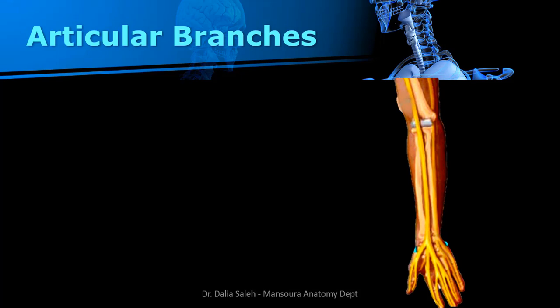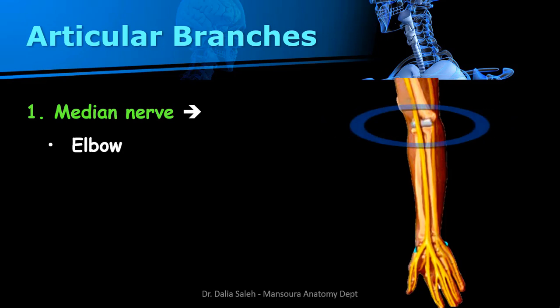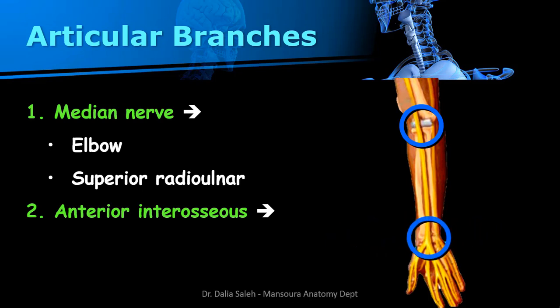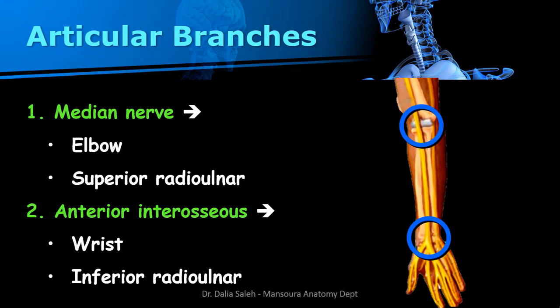Regarding articular branches: the median nerve supplies the elbow joint and the superior radio-ulnar joint, while the anterior interosseous nerve supplies the wrist joint and the inferior radio-ulnar joint.